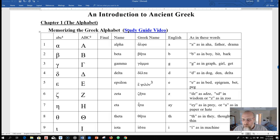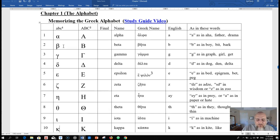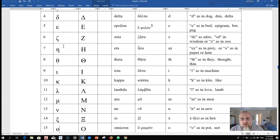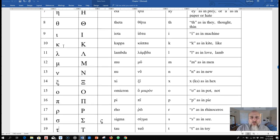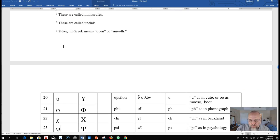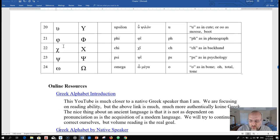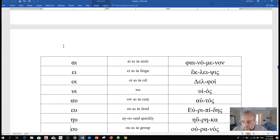So just as a matter of review: alpha, beta, gamma, delta, epsilon, zeta, eta, theta, iota, kappa, lambda, mu, nu, xi, omicron, pi, rho, sigma, tau. Go to the next page: upsilon, phi, chi, psi, omega. So get where you can write that down where it becomes second nature.